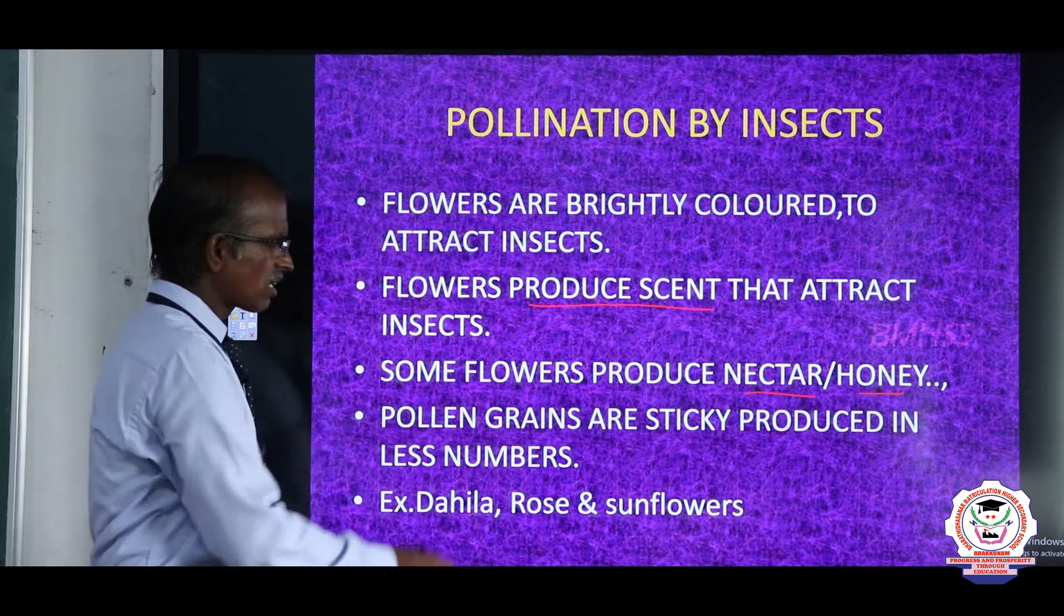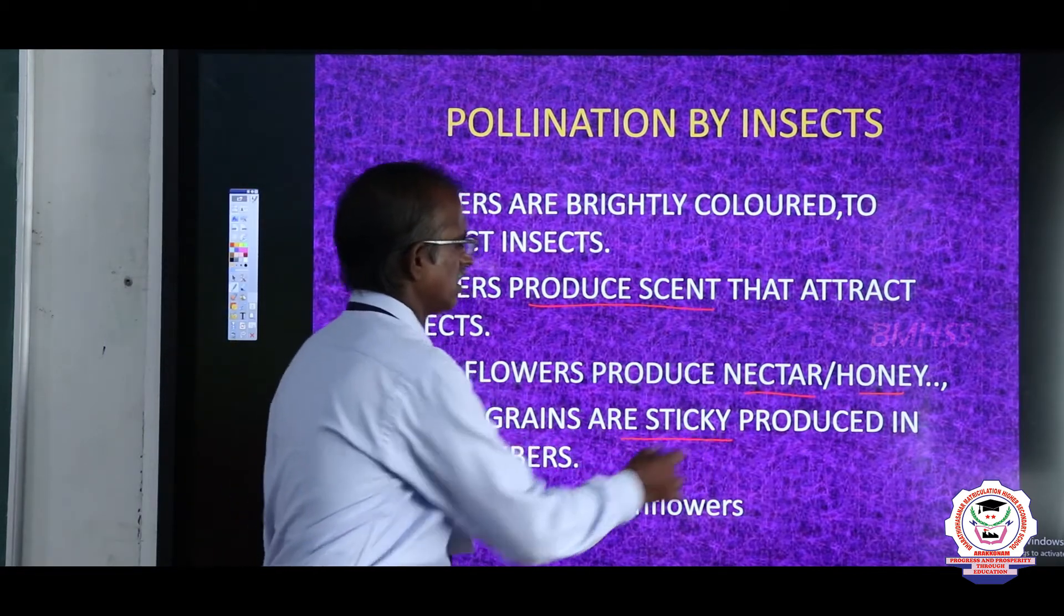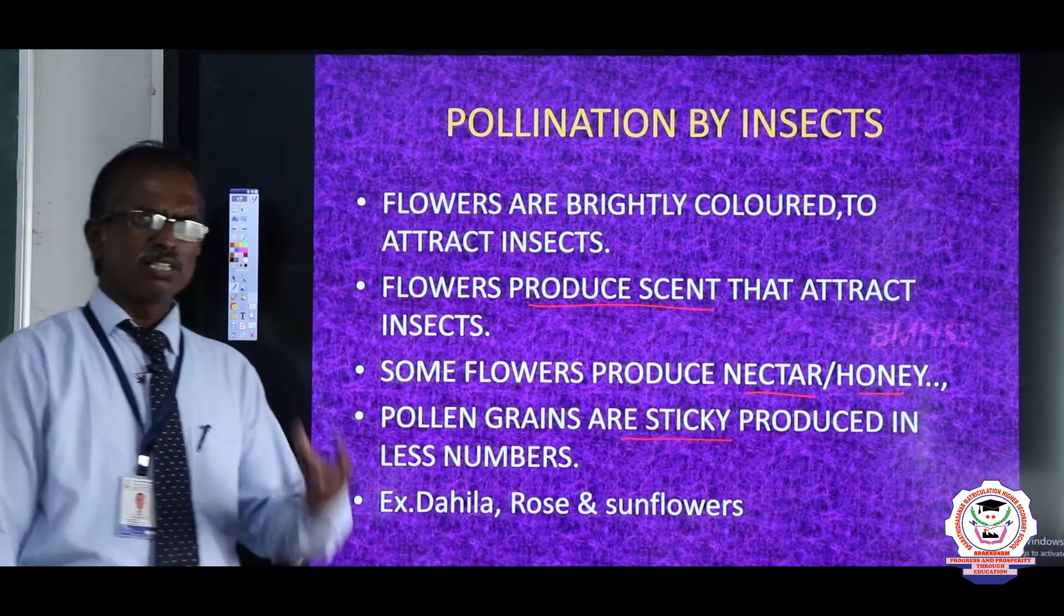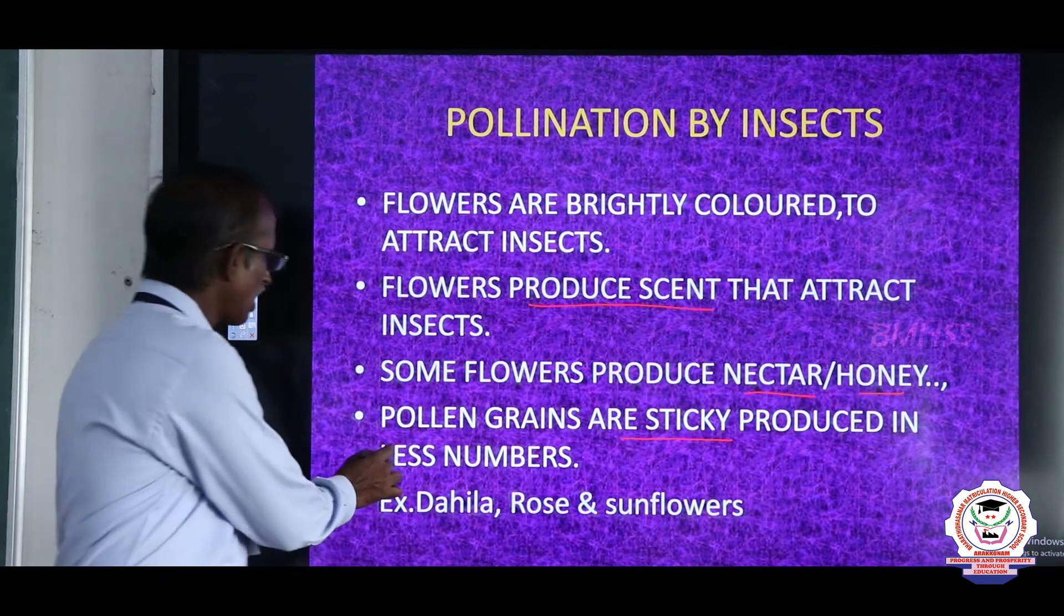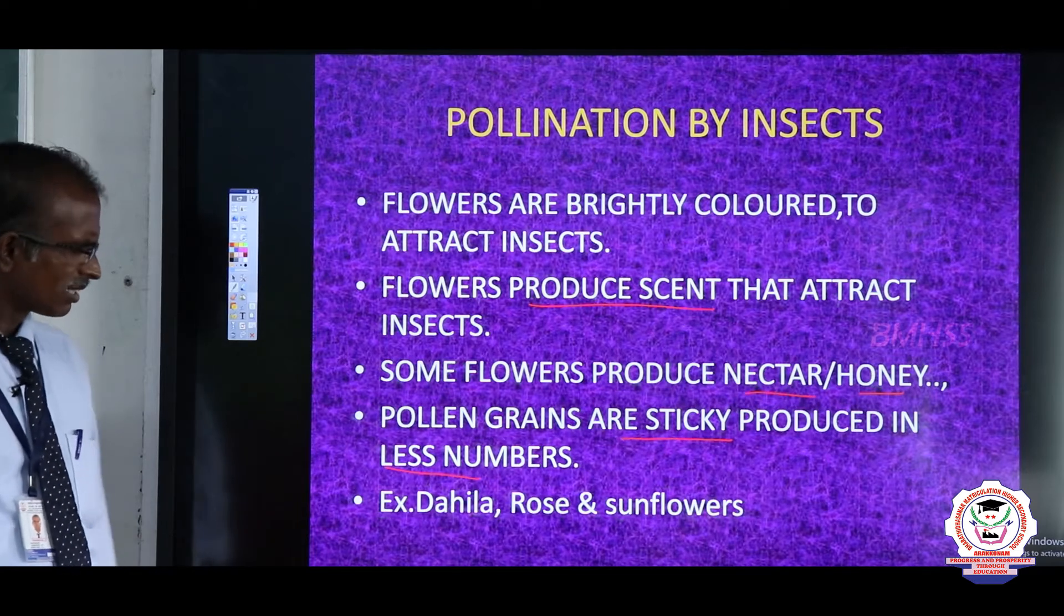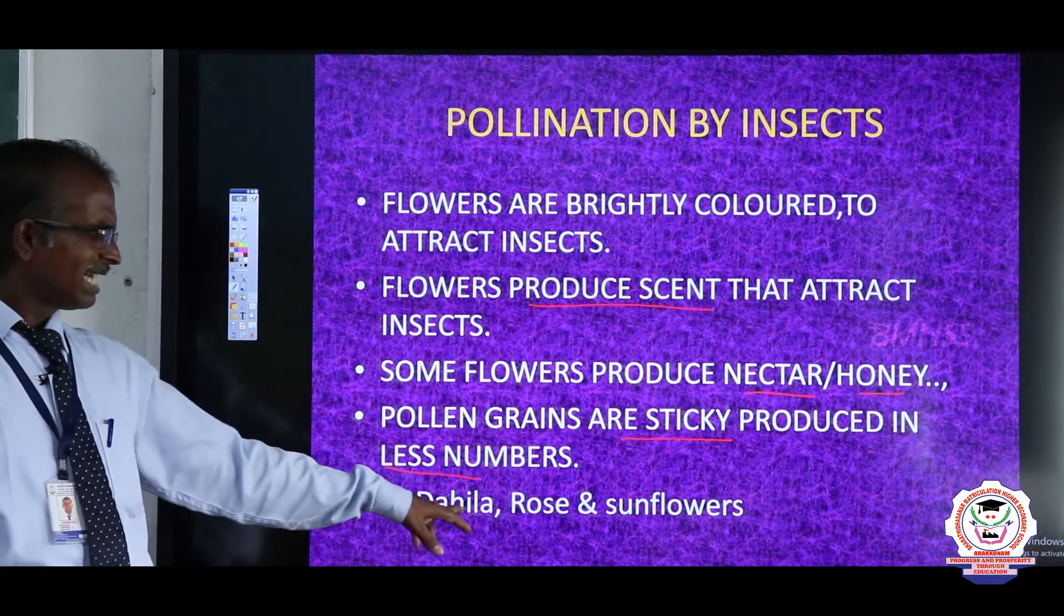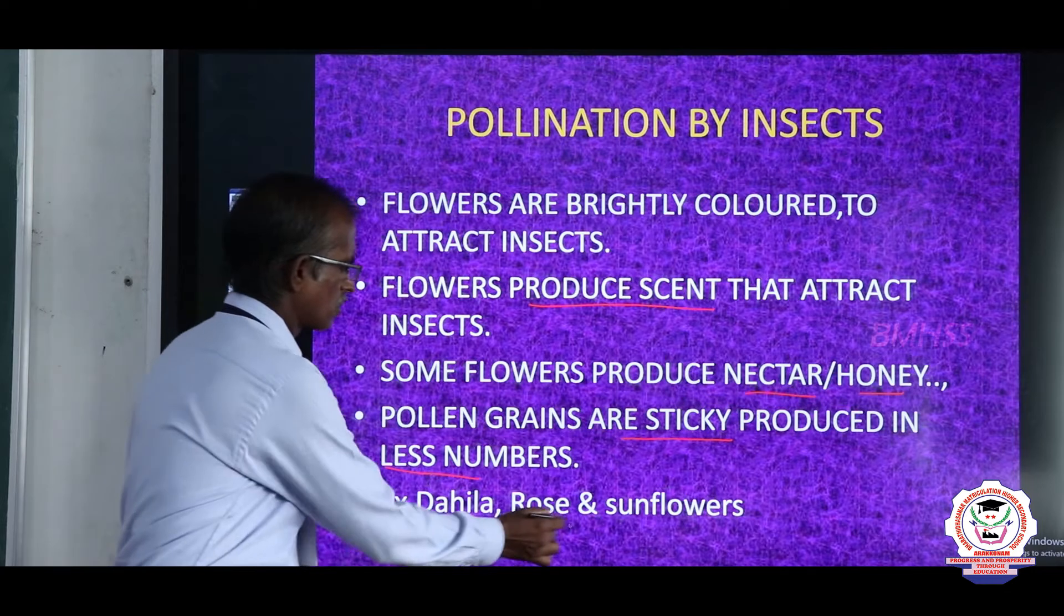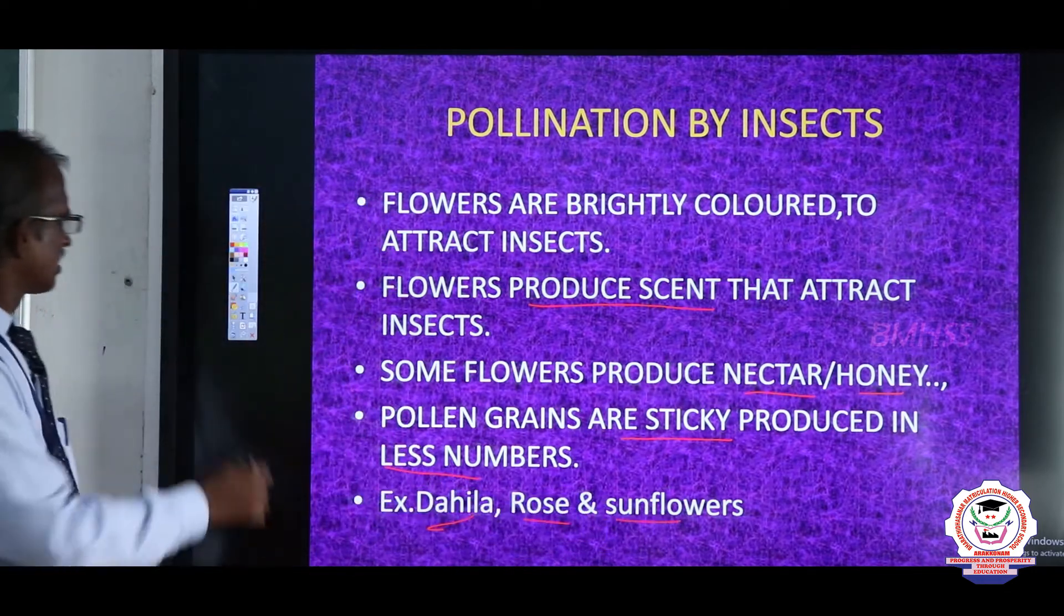Pollen grains are always sticky, produced in sticky nature. They are produced in less number. Examples: dahlia, rose, and sunflowers.